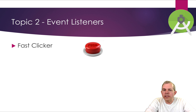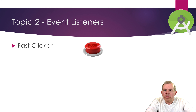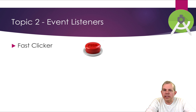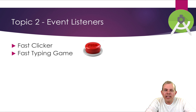We're going to start with the Event Listener called Button. The Fast Clicker application is a program that will allow us to time how many clicks you can do on a button in 30 seconds. A pretty simple app, but actually it's kind of fun to play.